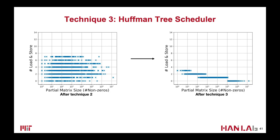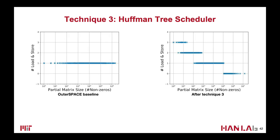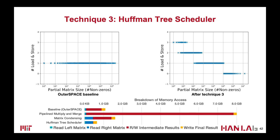Here we show the DRAM access distribution before and after Huffman tree scheduling — the X axis is in log scale. We can see that the load and store is further reduced compared to the previous step. Compared to the baseline Outer Space, we slightly increased load and store of the small partial matrices, but reduced load and store of the largest ones to zero. Therefore, the total DRAM accesses are largely reduced.